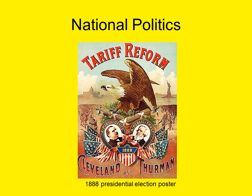Only two major issues seem to divide the major parties at this time: the tariff controversy and the nation's monetary policy. In terms of monetary policy, the country was divided over the ideal form of currency. Bankers and business owners largely supported the Republicans and the gold standard, while westerners preferred a silver standard. In general, poorer Americans and those with high levels of debt supported expansion of the supply of paper currency.